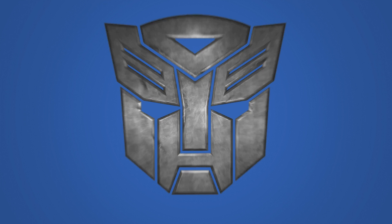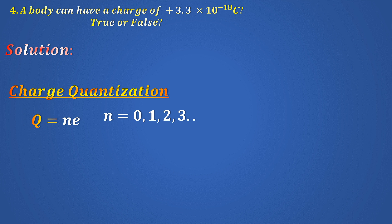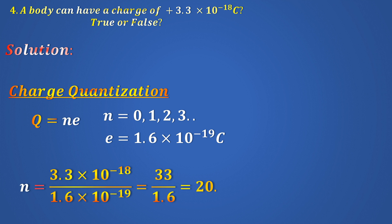Okay, let's do a couple of true-false questions. A body can have a charge of plus 3.3 times 10 to the minus 18 Coulombs. True or false? Do you know what concept we are talking about? Charge Quantization. Any charge Q must be equal to N times E where N is an integer and E is a charge on the electron 1.6 times 10 to the minus 19 Coulombs. So, in this case, N equals 3.3 times 10 to the minus 18 divided by 1.6 times 10 to the minus 19 which ends up becoming 20 point something something which is not an integer. Therefore, charge quantization immediately tells you that the answer is false. This charge cannot exist.